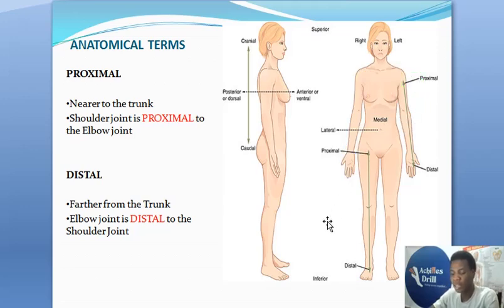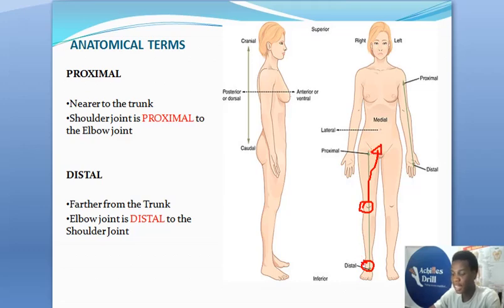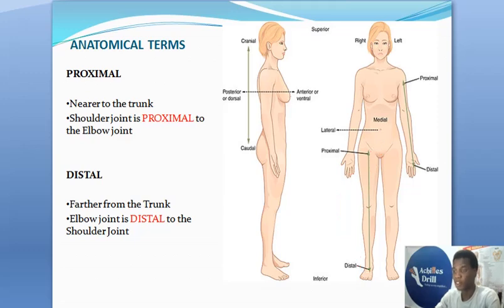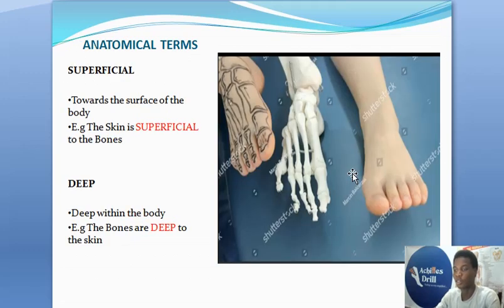On the lower limb, I can say my knee is proximal to my ankle. It simply means my knee is closer to where the limb joins the trunk compared to the ankle. Please take note of these important terms and relation — they are very important and will help you through your knowledge of anatomy.